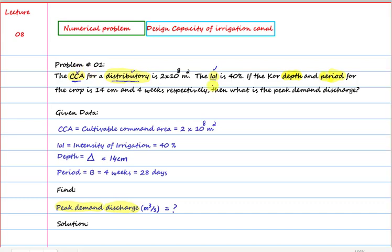IOI means intensity of irrigation, given to us as 40%. The kor depth is given as 14 centimeters and the period is given as 4 weeks. We represent kor depth with Delta and the time period with B. So kor depth Delta is 14 centimeters and period B is 4 weeks, which we will convert to 28 days.